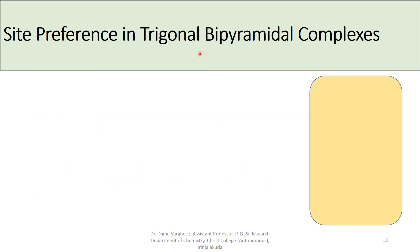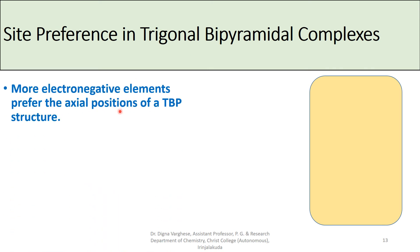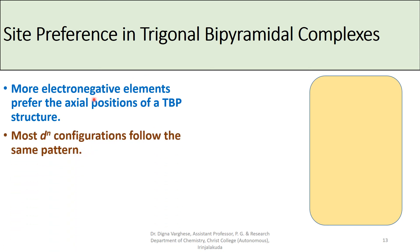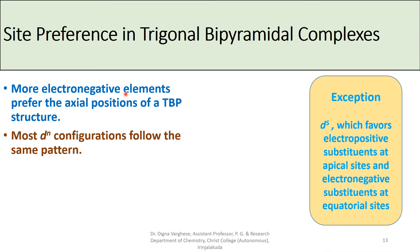Regarding site preferences in trigonal bipyramidal complexes: more electronegative elements prefer the axial positions of a TBP structure. Most dN configurations follow this pattern. The exception is d5, which favors electropositive substituents at axial positions and electronegative substituents at equatorial positions. The normally weak bonding of axial substituents is reversed with the d8 configuration—for example, a methyl group occupies the axial position in a d8 iridium(I) complex, in contrast to its usual equatorial position in phosphines.